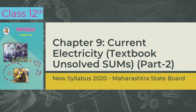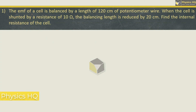Please check out the videos on MCQs and part 1 of sum solving on this chapter if you have not done it yet by clicking on the top right eye icon. The EMF of a cell is balanced by a length of 120 cm of potentiometer wire. When the cell is shunted by a resistance of 10 ohm, the balancing length is reduced by 20 cm. Find the internal resistance of the cell.